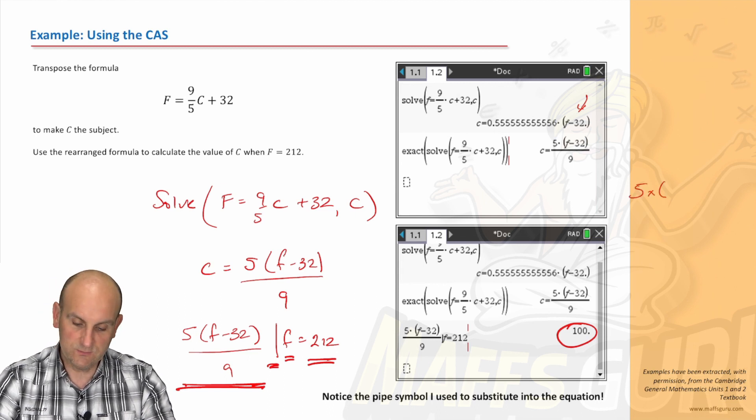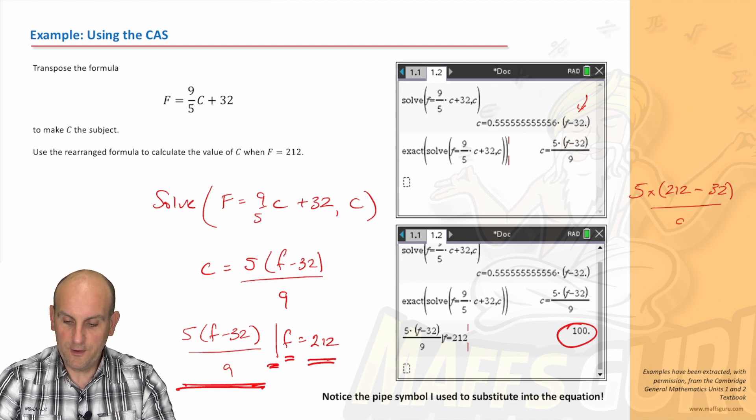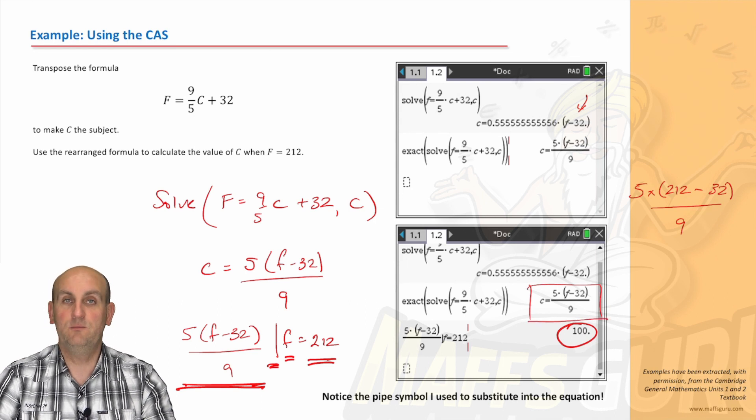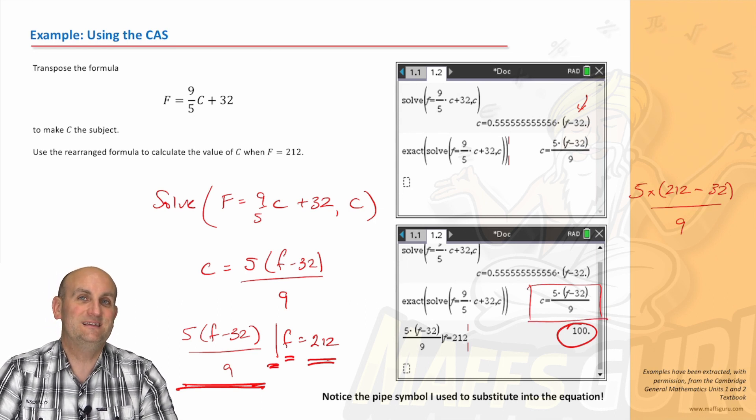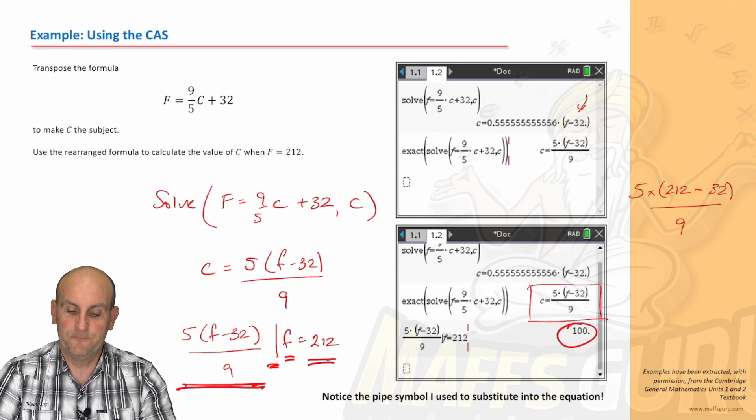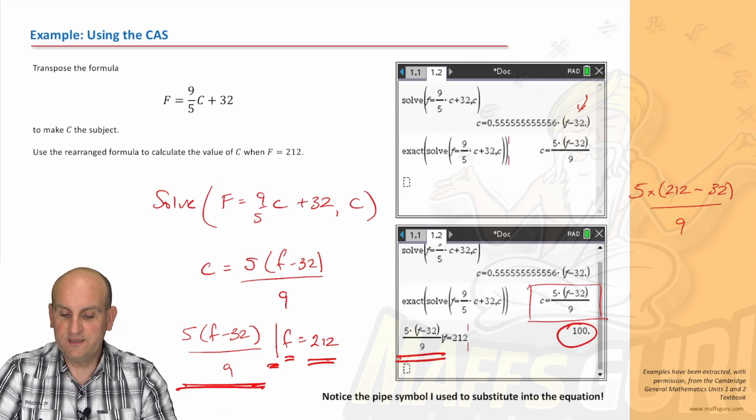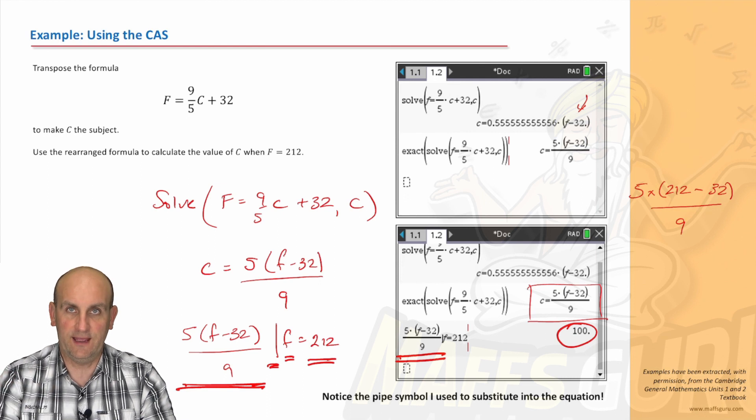Now obviously you could have done it a different way. You could have just done 5 times F was 212 minus 32 on 9, which is effectively what this equation here was, and done it the hard way. But if you've got a calculator that's going to make it easier for you, then just make it easier for you. Just notice that when you copy the formula down, you do not want the C equals—you want everything after that, because otherwise your calculator gets a bit confused.